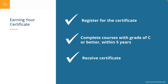Then, complete all of your required courses with an overall minimum 3.0 GPA and a grade of C or better within five years. One of the biggest benefits here is that you actually pay as you go — you don't pay for the entire certificate at once; you pay for each course one at a time.